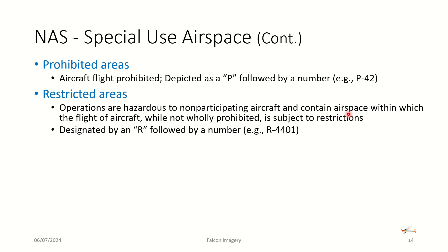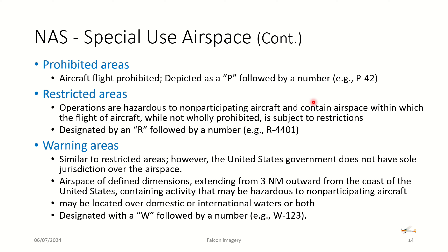Restricted areas are operations hazardous to non-participating aircraft, containing airspace within which flight — while not wholly prohibited — is subject to restriction, designated by an R followed by a number. If there's a restricted area, you'd have to contact the controlling agency to see what the restrictions are and if there's any issue with flying through that space.